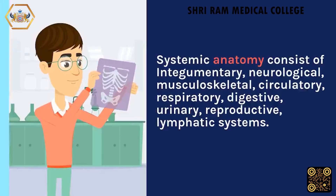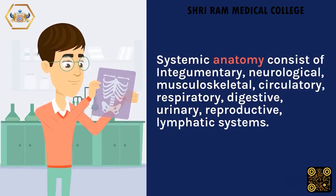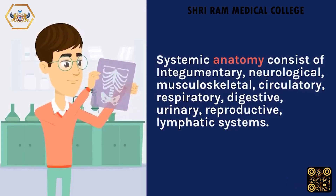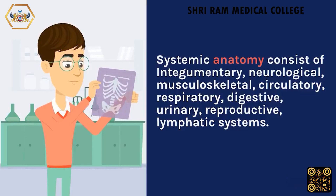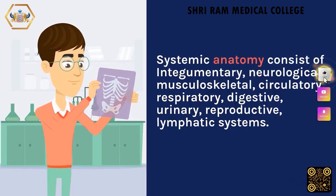Systemic anatomy consists of integumentary, neurological, musculoskeletal, circulatory, respiratory, digestive, urinary, reproductive, and lymphatic systems.